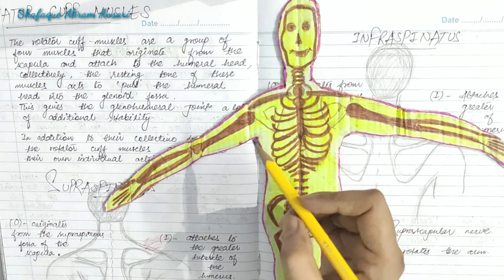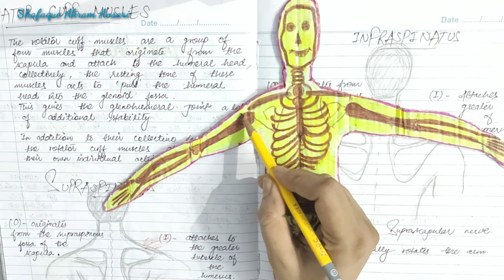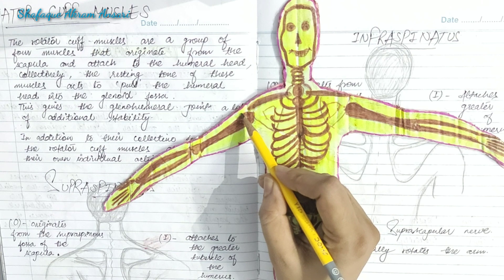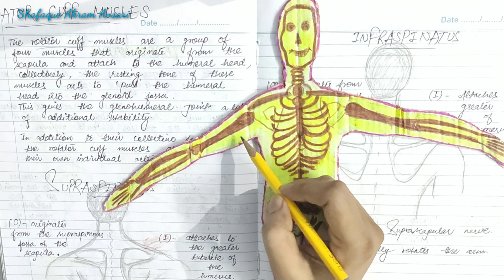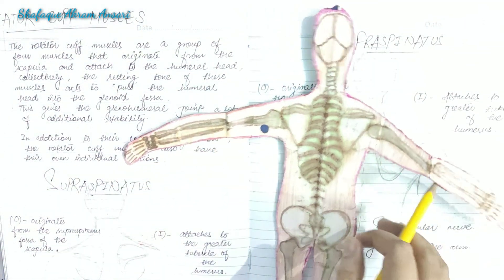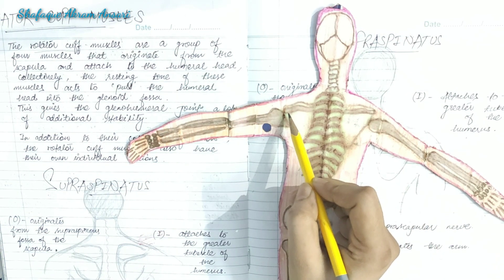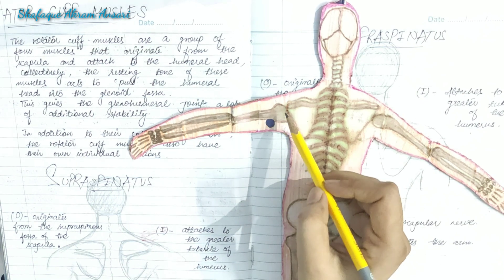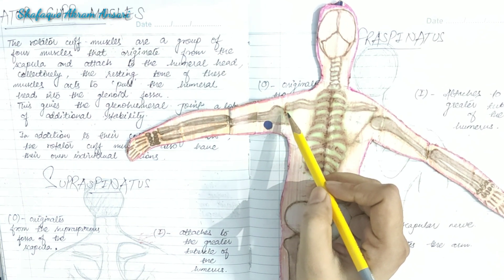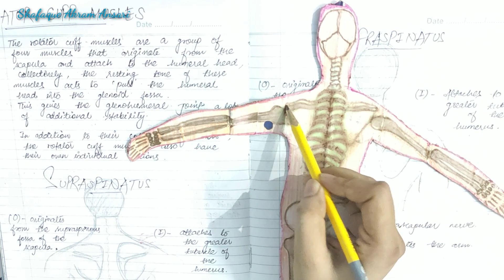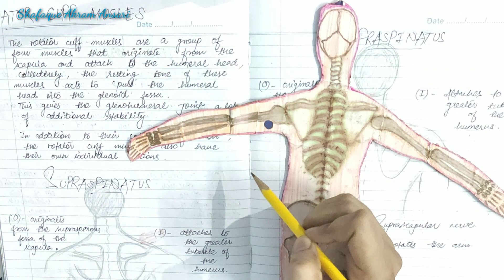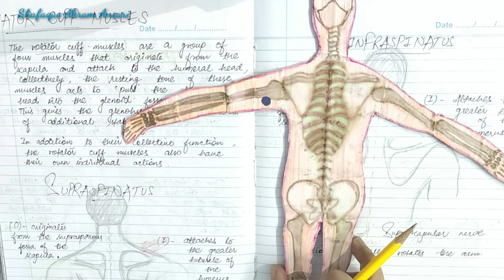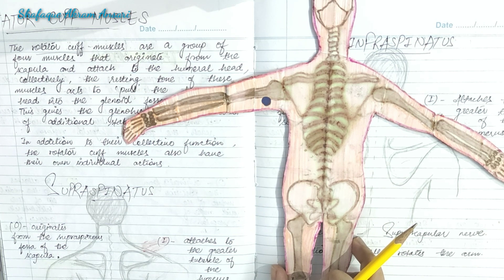The rotator cuff gets its name from the common tendinous attachment of all the rotator cuff muscles and the way that attachment sits over the head of the humerus. This common tendinous attachment wraps over the top of the humerus and resembles a shirt cuff. They originate from the scapula and attach to the humeral head. Collectively, the resting tone of these muscles acts to pull the humeral head into the glenoid fossa, giving the glenohumeral joint additional stability. The rotator cuff muscles also have their own individual actions.